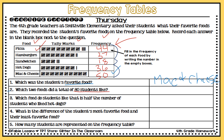Question two: which two foods did a total of 80 students like? That tells me one number plus another number is going to equal 80. Which two foods, when added together, equal 80? Pizza is 44 and hot dogs is 36, so when I add those together I get 80. So those two foods are pizza and hot dogs.